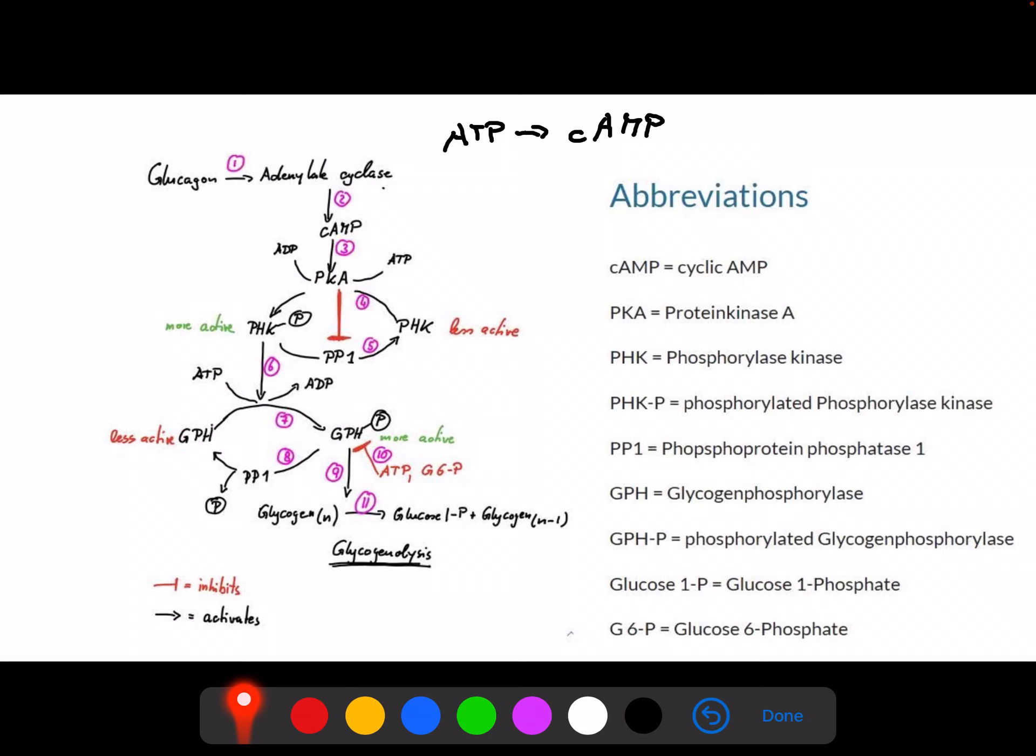This switch is even more pronounced because PKA not only activates this way, it also inactivates phosphoprotein phosphatase 1. So it shifts everything to that side and inhibits the reverse reaction. Nevertheless, we now have an active phosphorylase kinase.